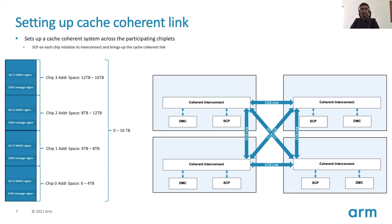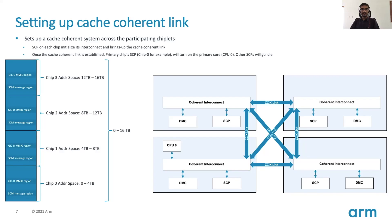Finally, like we saw in the single-chip boot flow, the primary chip's SCP will turn on CPU 0, which will go on to boot its bootloader stages — BL1, BL2, and BL31. The important point to note here is that the SCP on the other chips will go to idle state — it won't turn on any cores on its own chip at this point.